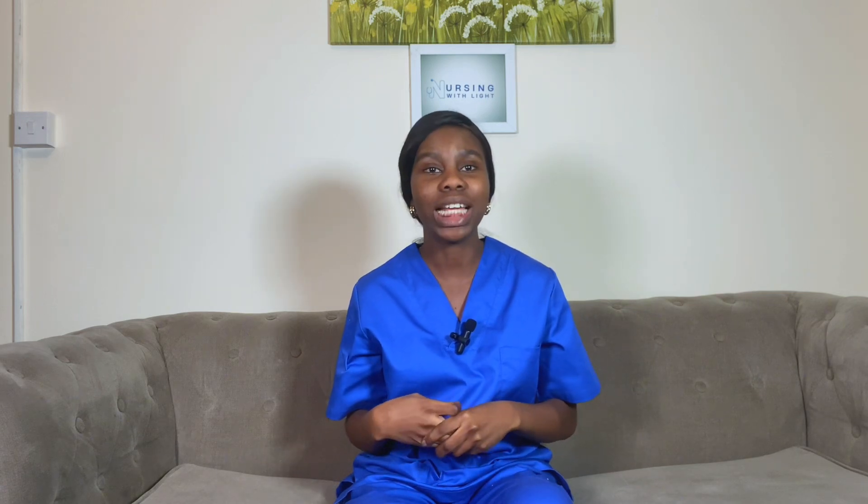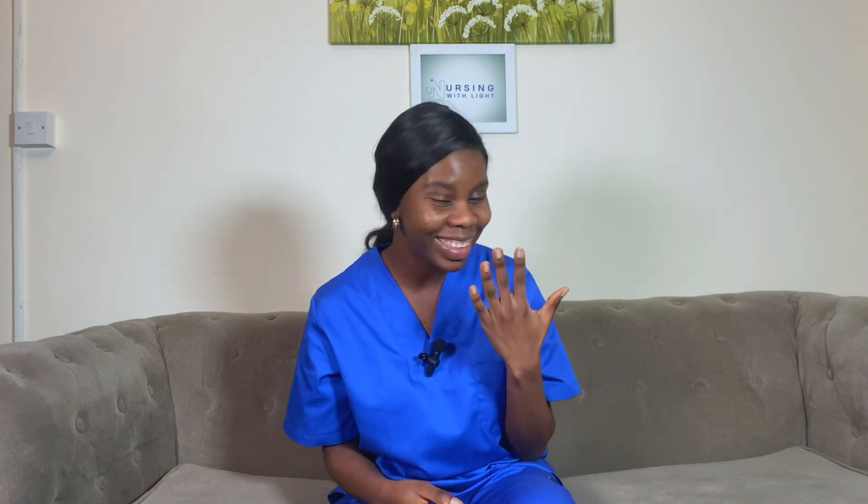The first type of injection, which is the most common form, is the intramuscular injection, also known as the IM injection. Just as the name implies, it is injected into the muscle — it could be the muscle of the thigh, the gluteal muscle, or the shoulder. This type of injection allows rapid absorption of the medication into the bloodstream and is usually used for vaccines and antibiotics. If you're a student nurse, you will at some point have to administer an intramuscular injection — walk up to your clinical instructors and ask them to allow you to try.